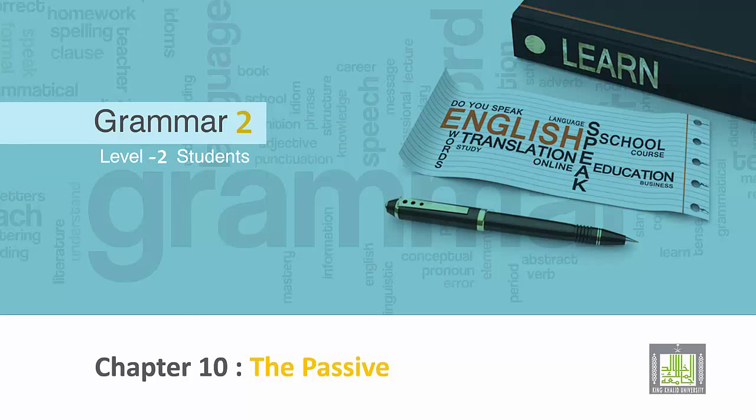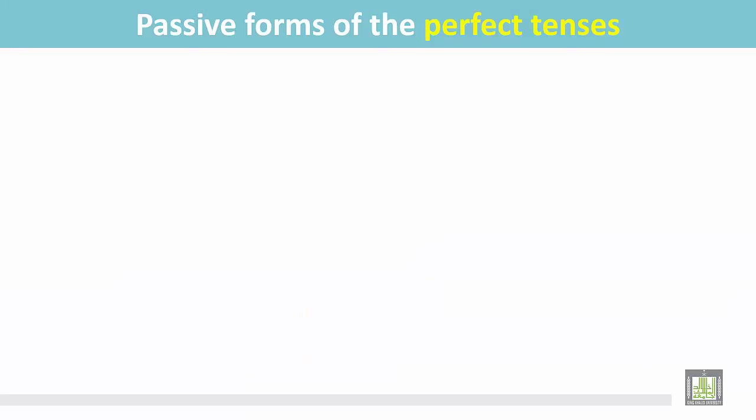Grammar 2 for level 2 students. Chapter 10: The Passive. Passive forms of the perfect tenses.